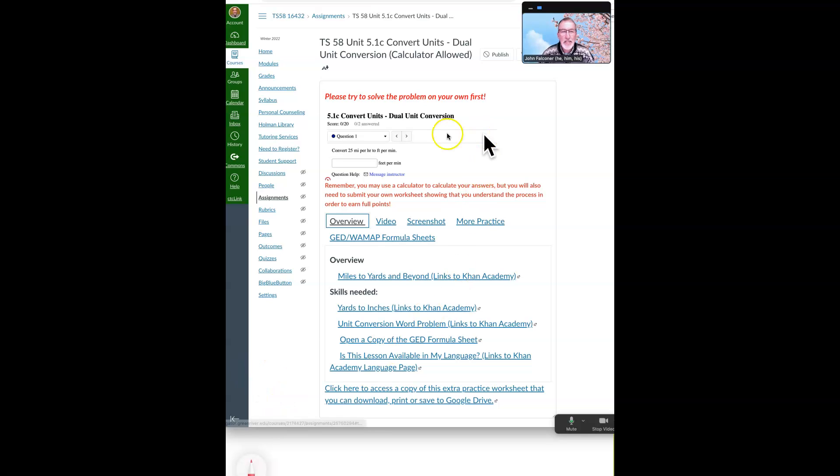Hello everybody. We're going to take a look at unit 5.1c at WAMAP, which is converting units when you have dual unit conversion - converting two sets of units at the same time.